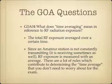What does time averaging mean in reference to RF radiation exposure? Time averaging is the total RF exposure averaged over a certain time. Since most amateurs don't transmit constantly — you're transmitting and receiving — RF exposure is measured with an average. Based on the frequency and power you're transmitting and the amount of time transmitting versus listening, that goes into a formula and produces the time average of your RF exposure. The total RF exposure averaged over a certain time is time averaging.